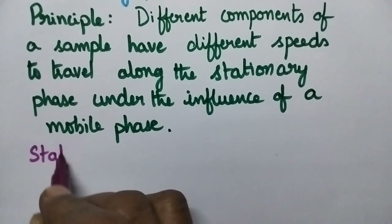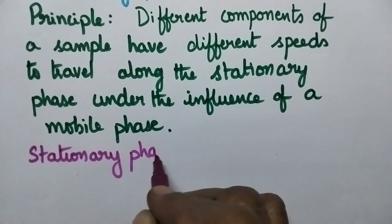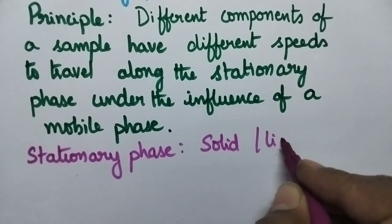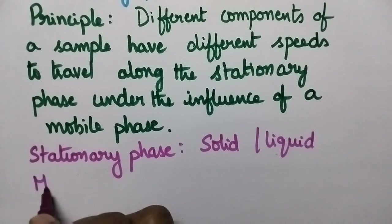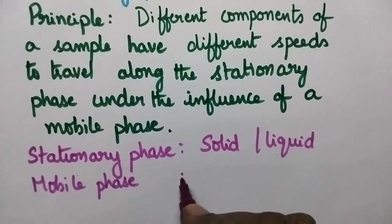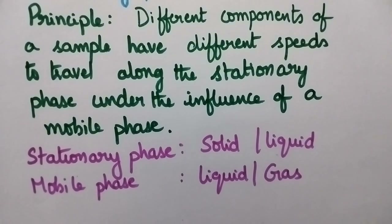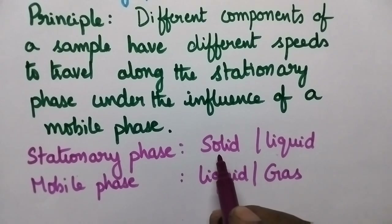The stationary phase may be a solid or a liquid. At the same time, the mobile phase used for the separation may be a liquid or a gas. If the stationary phase is a solid, that chromatography is called adsorption chromatography.